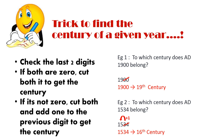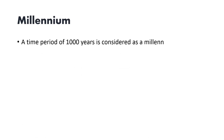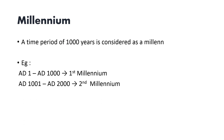Now let us see about a millennium. A millennium is a period of one thousand years. From AD 1 to AD 1000 is the first millennium, AD 1001 to 2000 is the second millennium, and we are now in the third millennium, between 2001 and 3000. Just like decades and centuries, a millennium can also be found using a simple trick.